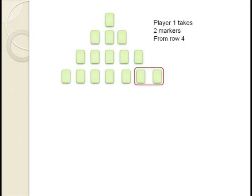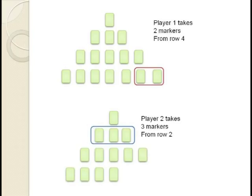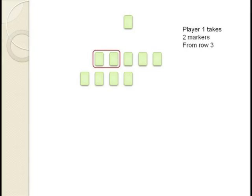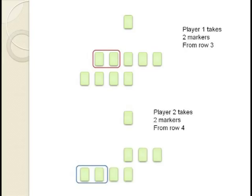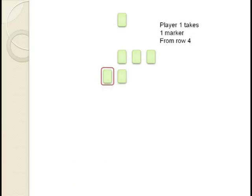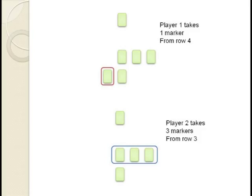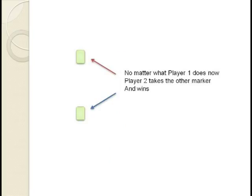Here's a sample game using the Marienbad pattern. Player one takes two markers from the fourth row. Player two responds by taking all three markers on the second row. Now player one takes two markers from the third row and player two takes two markers from the fourth row. Player one takes one marker from the fourth row and player two takes the remaining three markers from the third row. Now player two is forced to win. Player one must choose one of the remaining markers and whichever he chooses, player two chooses the other marker and wins.